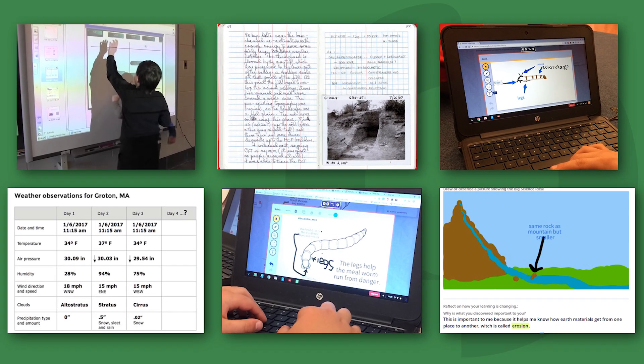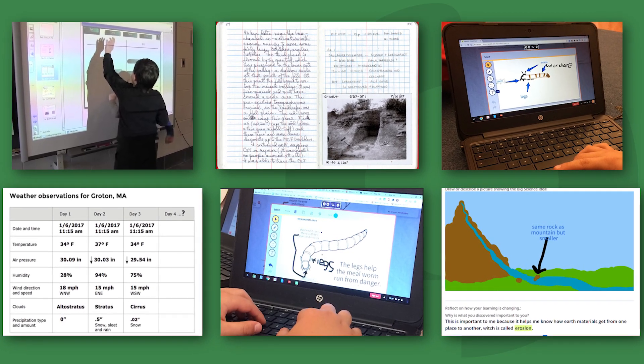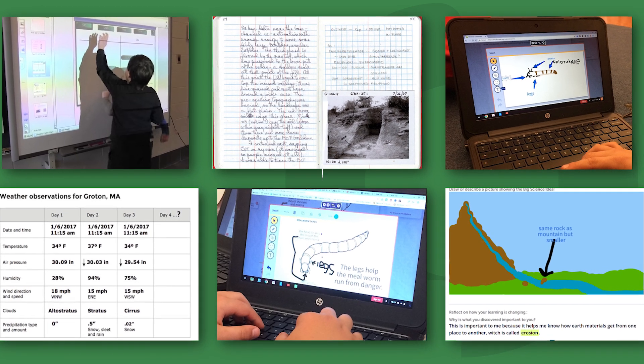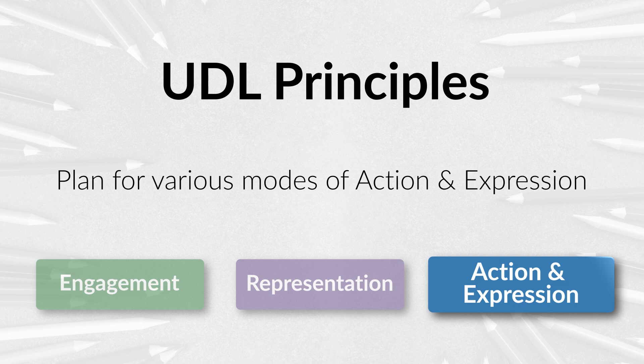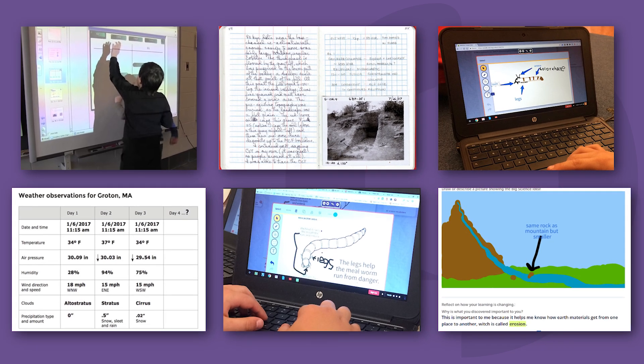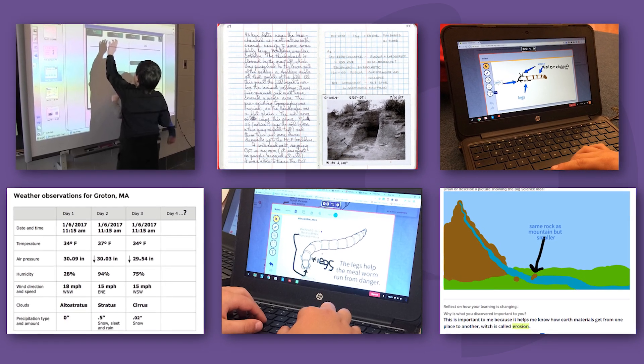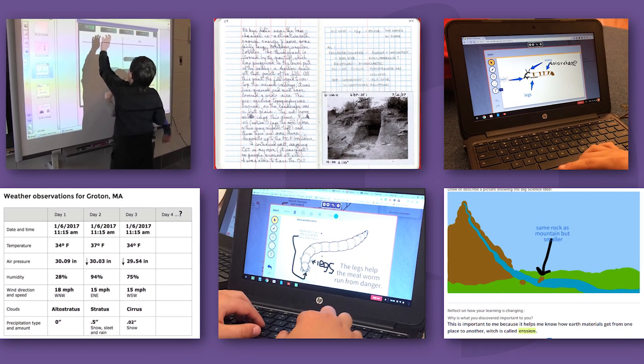Additionally, on the back end when they're trying to express themselves, giving them choice in how they decide to express that understanding. Plan for various modes of action and expression. It might look like drawing about some of their understandings of the concepts. And in order to extend their learning, it also might look like them designing something entirely different — now making connections between science ideas — using makerspace material that we have here at West Elementary.